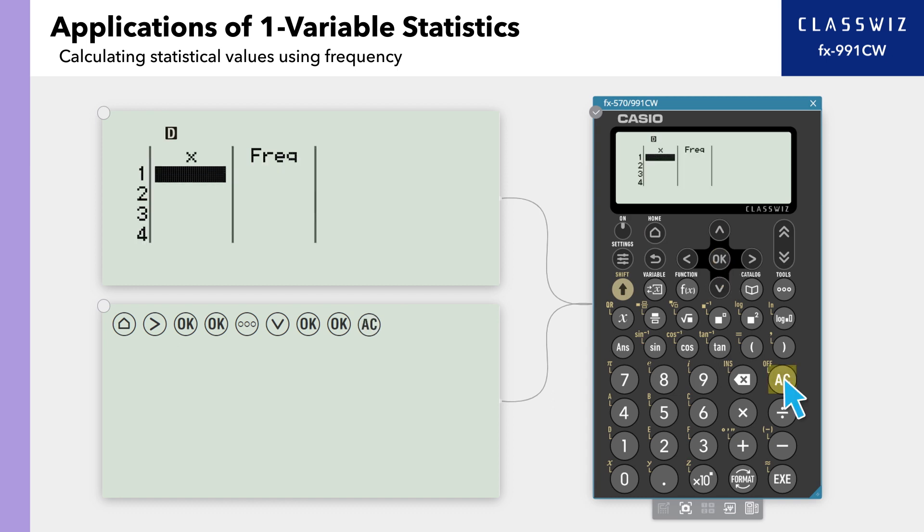Press AC to go to the Statistics Editor, where you will see columns for both X and Frequency. You can use this screen to enter the frequency of the values. In this example, enter values 1 to 10 in rows 1 to 10, respectively.